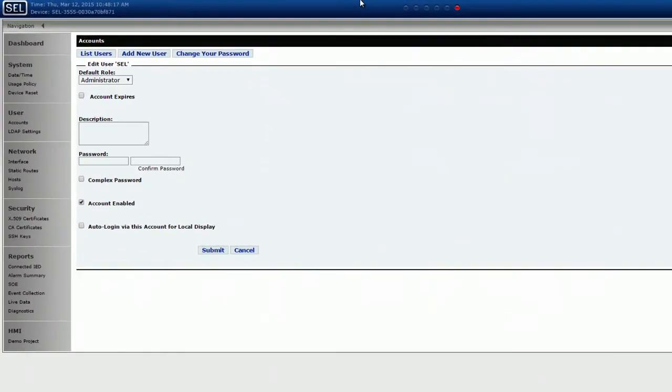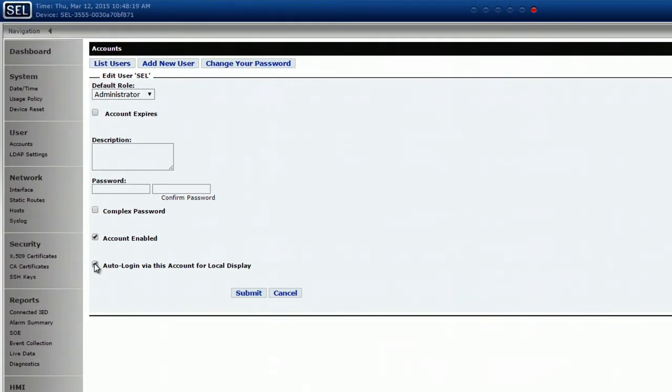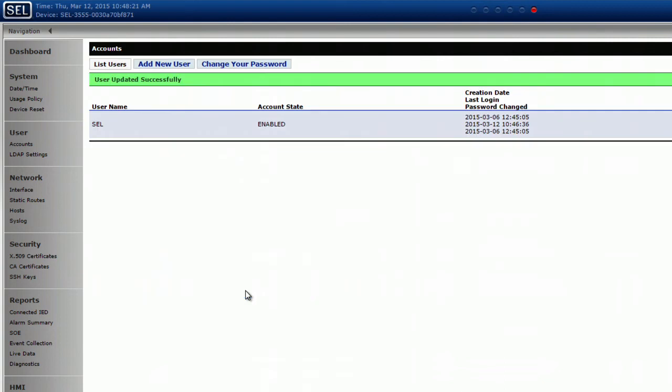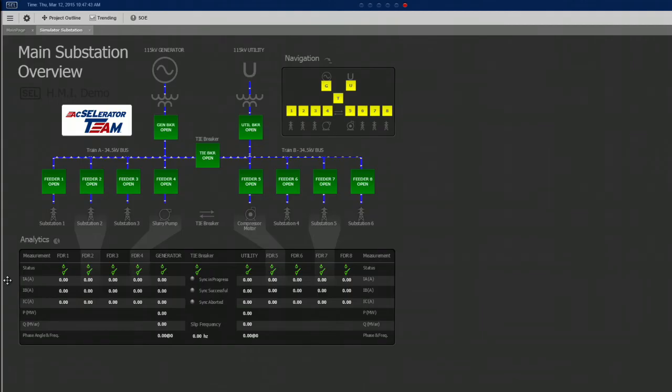If the unit resets or somebody cycles power during maintenance, when they turn it on, the unit will automatically log in and go to the page I want it to go to, which in this case would be the HMI. They don't have to log in and navigate through the web interface.